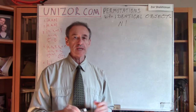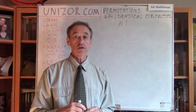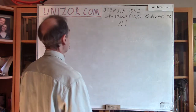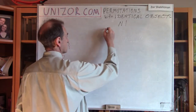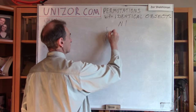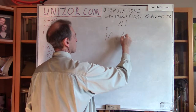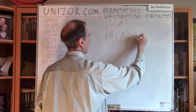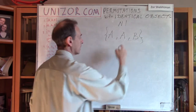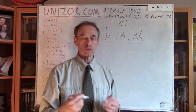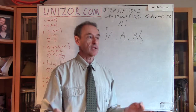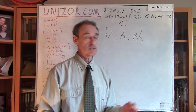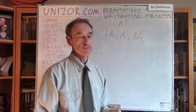But what if some of our objects are the same? Here is an example. You have a set of objects — let's say three letters: A, A, and B. So two letters are identical. The question is how many different permutations exist of this particular set of three letters.